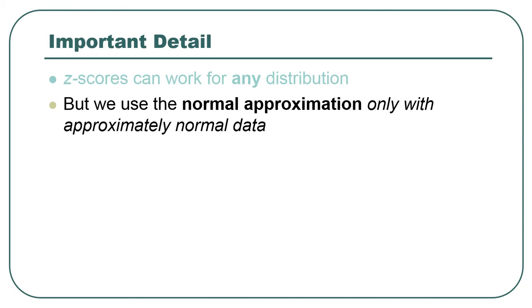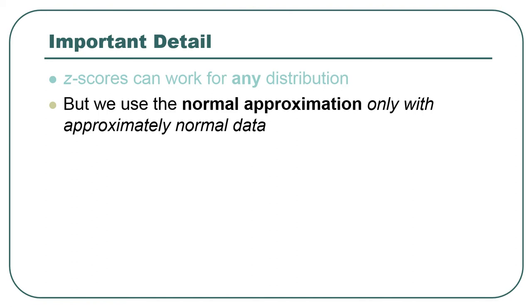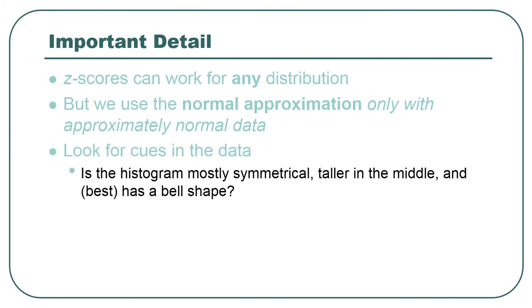So the normal distribution is special because it's one of the kinds of distributions where you can use that trick. So even though you can use z-scores with anything, you can't necessarily figure out areas by using z-scores. So if you're using the normal approximation, then you need to understand how normal the data really is going to be. But just for right now, I can say you can look for clues in the data. So is the histogram symmetrical? And is it taller in the middle? And even better, does it have kind of a bell shape with little tails?